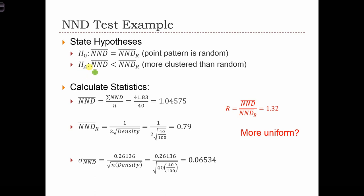So that's the null and alternative. In this case, we are looking for clustered. So it's a left tail test. We want NND bar to be less than what we see when the data are random.